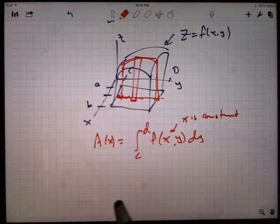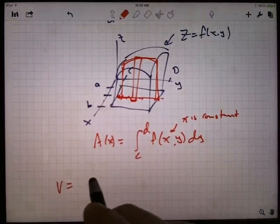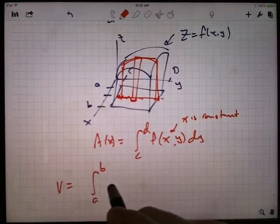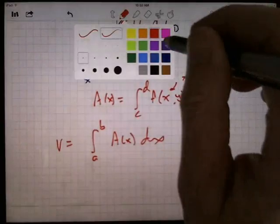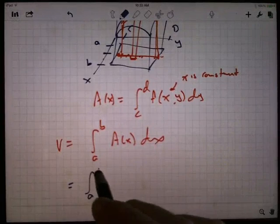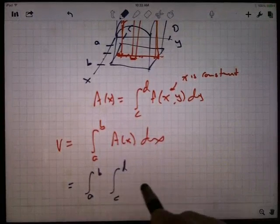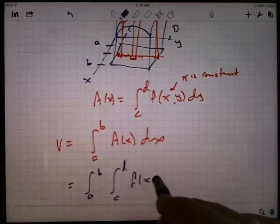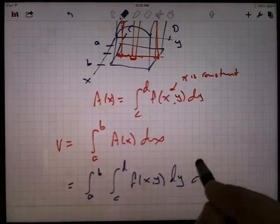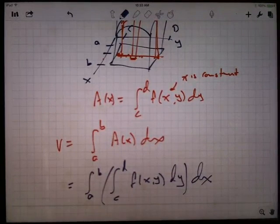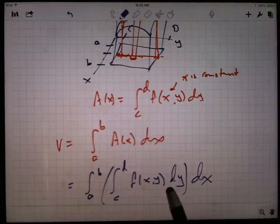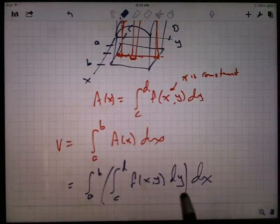So the total volume looks like an integral from a to b of this area function, dx. But that area function is the integral from c to d of f of x, y, dy. And then you're integrating that dx, so there's this thing. This is what's called an iterated integral. You first integrate with respect to y from the limits that are put on y, and then you integrate the result with respect to x.